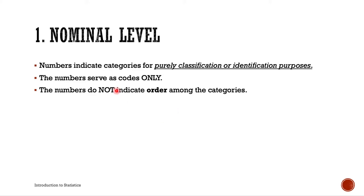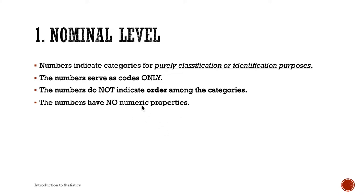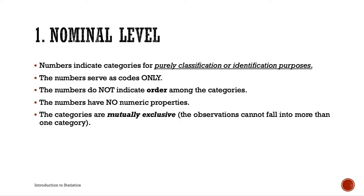In the nominal scale, numbers have no numeric properties. Therefore, the four fundamental arithmetic operations — addition, subtraction, multiplication, and division — cannot be applied to numbers in this scale. Also, categories are mutually exclusive, meaning observations cannot fall into more than one category.